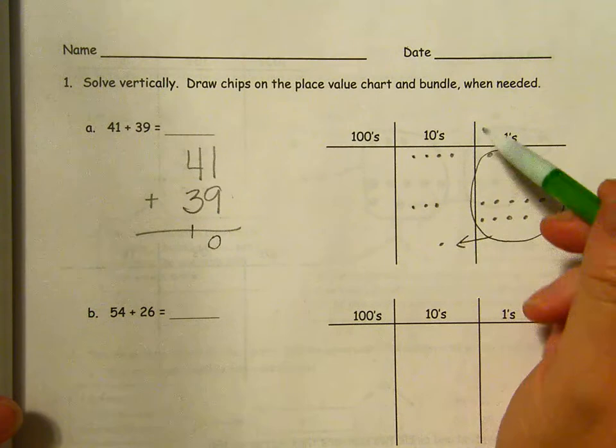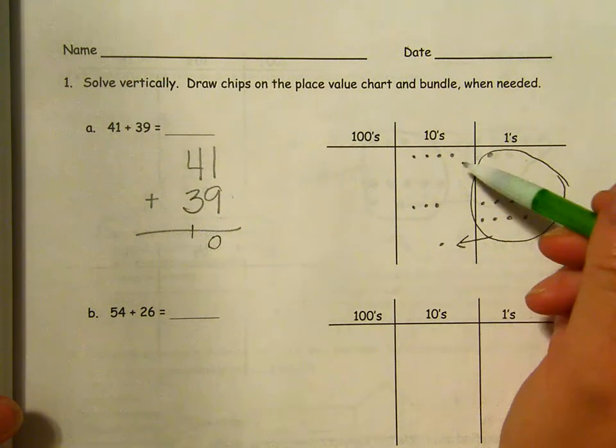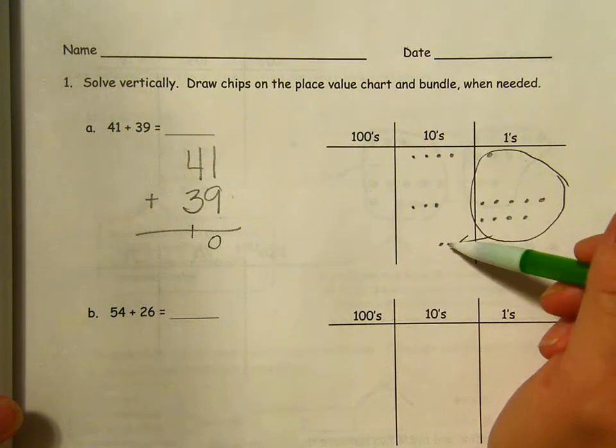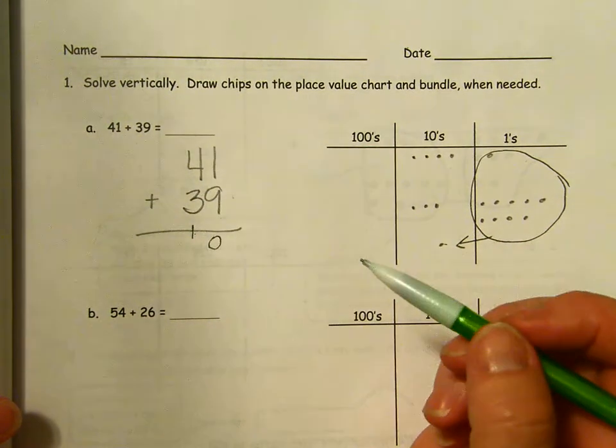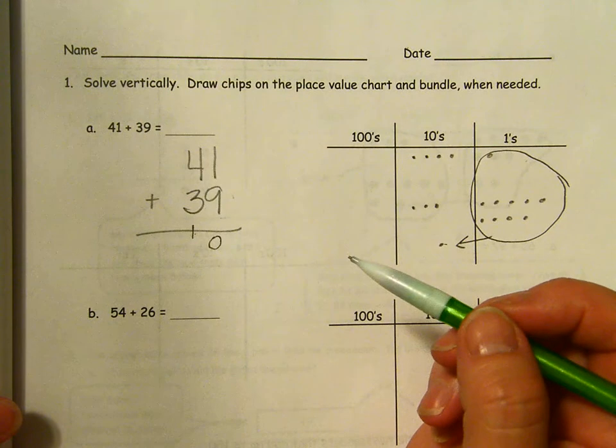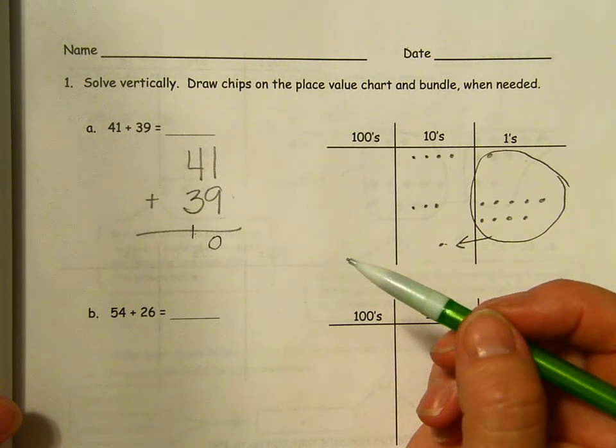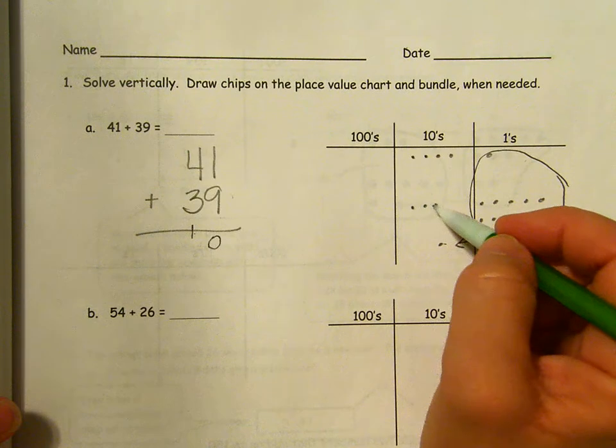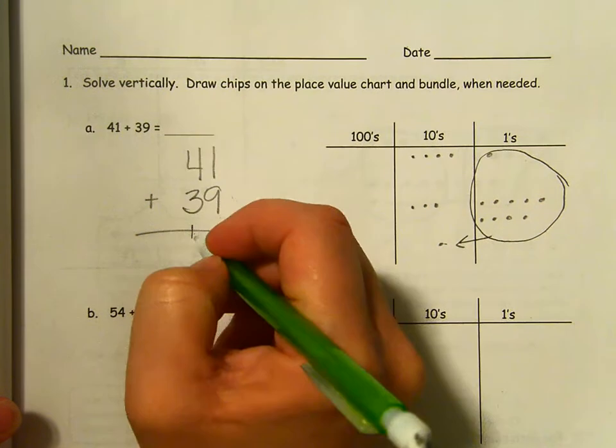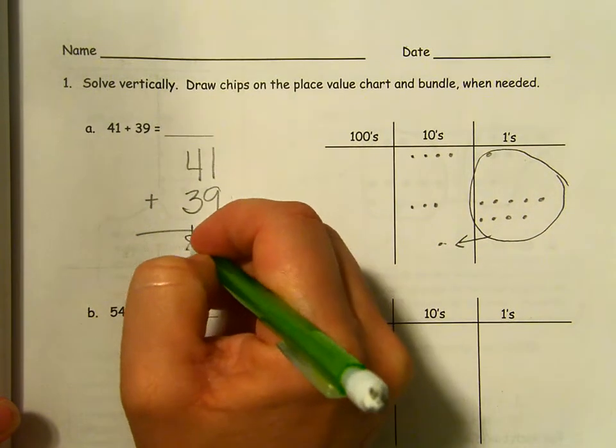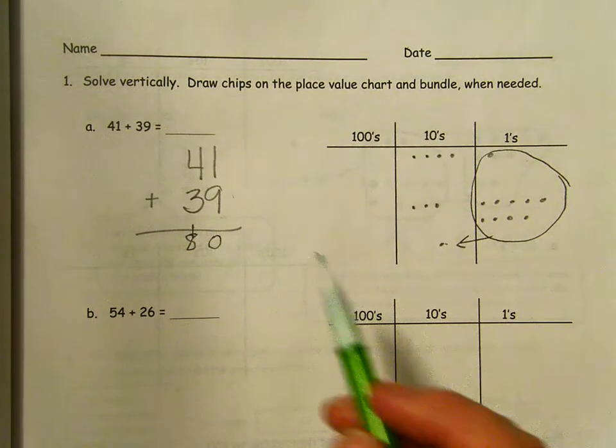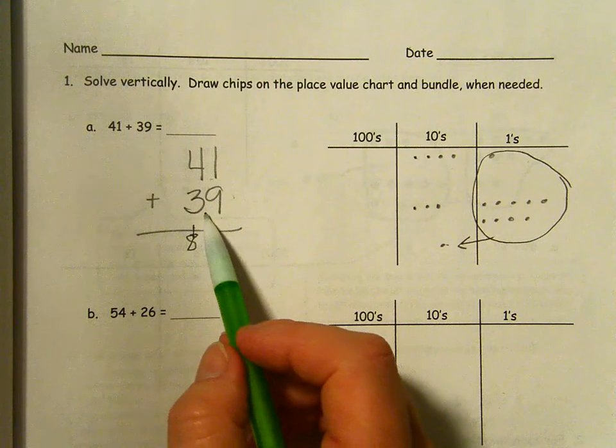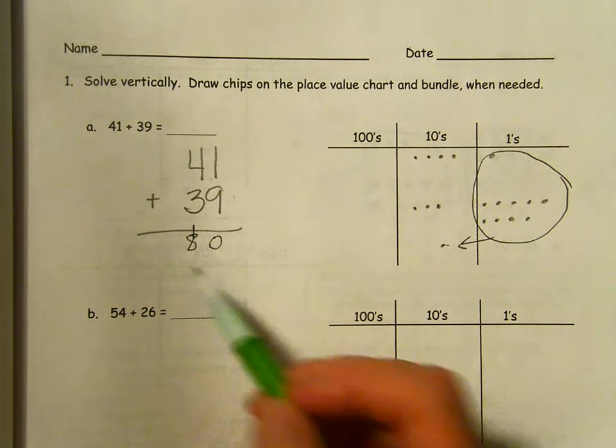Now I'm ready to add up my tens. I have four plus three plus one. Four plus three plus one. Is that going to let me bundle and compose a hundred? No. I have four, five, six, seven, eight, but I can't bring one over to the hundreds. So 41 plus 39 equals 80.